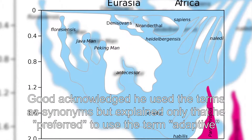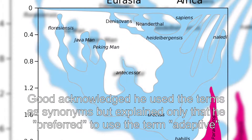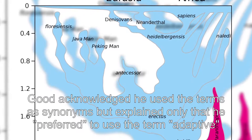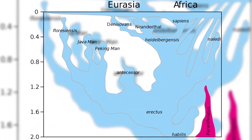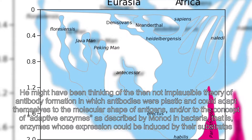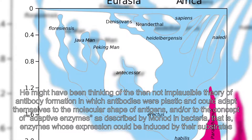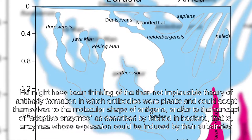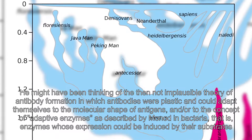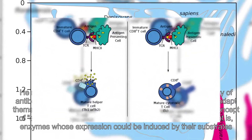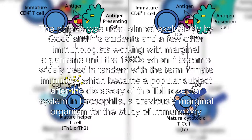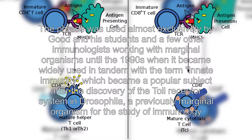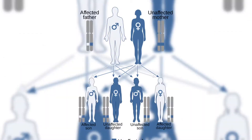Good acknowledged he used the terms as synonyms but explained only that he preferred to use the term adaptive. He might have been thinking of the then-not-implausible theory of antibody formation in which antibodies were plastic and could adapt themselves to the molecular shape of antigens, and/or to the concept of adaptive enzymes as described by Monod in bacteria — that is, enzymes whose expression could be induced by their substrates.